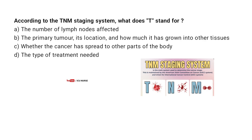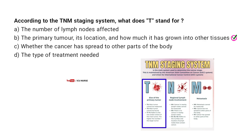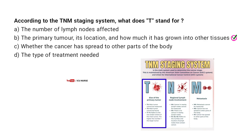Correct answer: B. The primary tumor, its location and how much it has grown into other tissues. T in the TNM system describes the size and extent of the main tumor, that is the extent of the primary tumor.